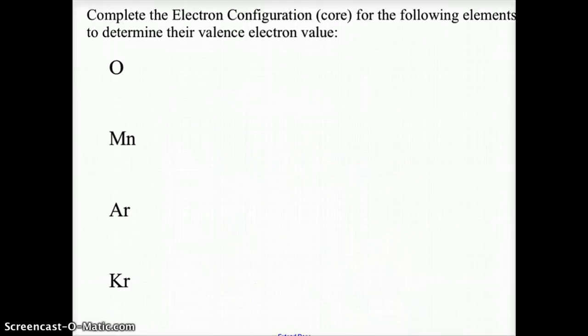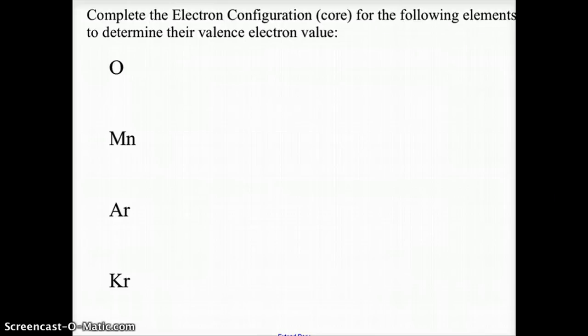So here we have four examples: oxygen, manganese, argon, and krypton. Go ahead and figure out the electron configuration using core or noble gas notation, and figure out the valence electron value for each of the elements. Go ahead and pause the video now and complete that work, and when you come back you can check your answers.